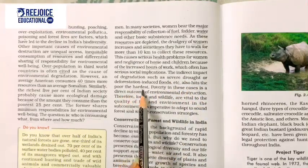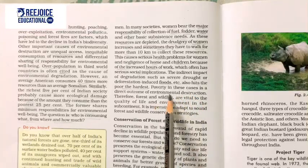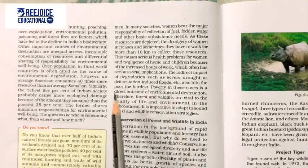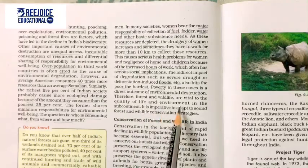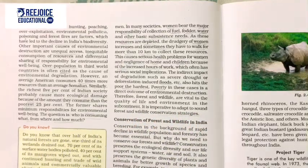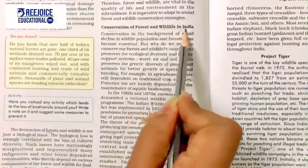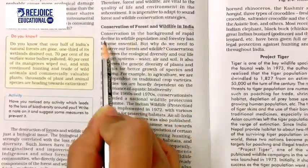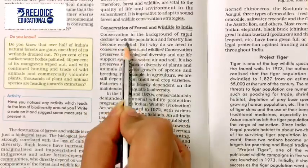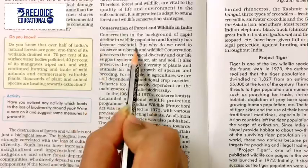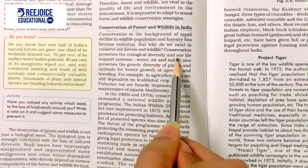The indirect impact of degradation — such as severe drought or deforestation leading to floods — also hits the poor the hardest. Poverty in these cases is a direct outcome of environmental destruction. Therefore, forest and wildlife are critical to the quality of life and environment in the subcontinent. It is imperative to adopt sound forest and wildlife conservation strategies.